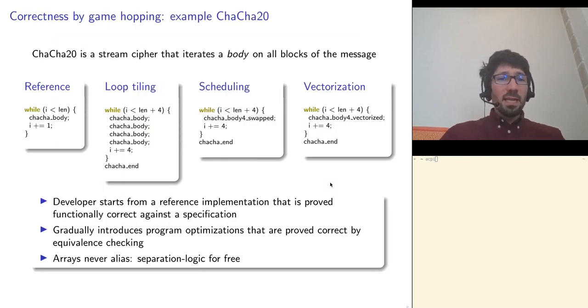Let me now zoom into the last hops of the correctness proof of ChaCha20. This stream cipher applies a body of code to each block of the message to encrypt. We want to prove this reference implementation equivalent to the optimized vectorized version. We do so in three steps, in three hops. In the first hop, the loop is unrolled a bit, so that at each loop iteration, there are four blocks of the message that are processed.